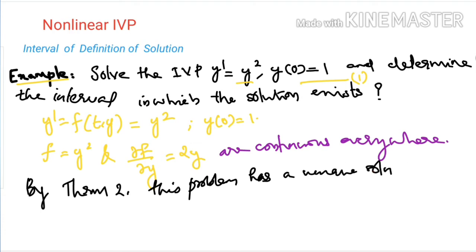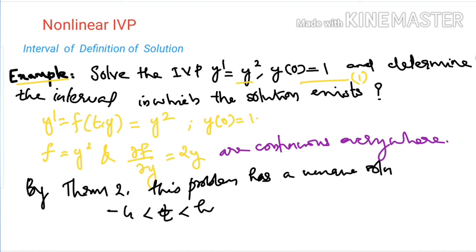The unique solution exists in some interval h such that t₀ − h < t < t₀ + h. Here t₀ is 0, so the interval is −h < t < h. In this interval, it has a unique solution. Let's check what the solution is.